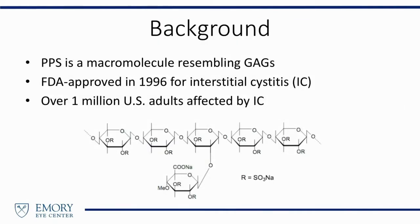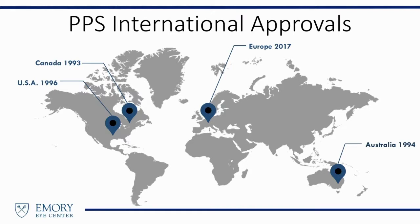So what is pentosan polysulfate? This is a macromolecule that resembles glycosaminoglycans. It's been approved for over 20 years for treatment of interstitial cystitis — a bladder or lower pelvic pain syndrome that affects over 1 million U.S. adults, predominantly female. This drug is approved worldwide, most notably in Canada, the U.S., and Australia, for over 20 years.